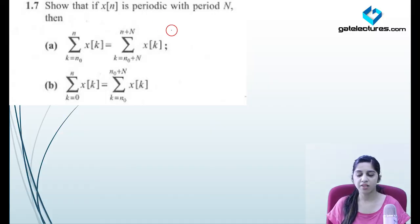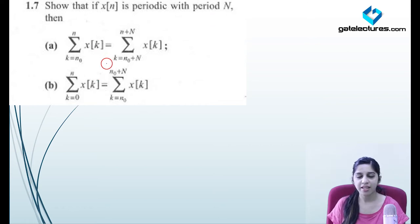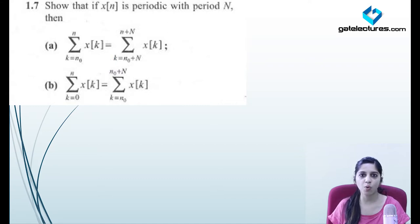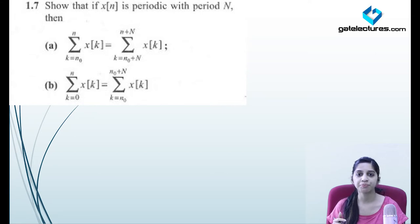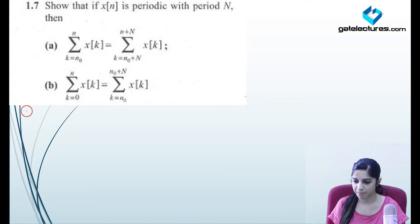Look at the next question. They've given a signal x[n] which is periodic with period capital N, and they're asking you to prove two equations. Basically, if you're adding this time period N to both the lower and upper limits of summation, the summation is going to remain the same. Logically, after that period, the signal repeats its value and shape, so the summation is going to be the same.